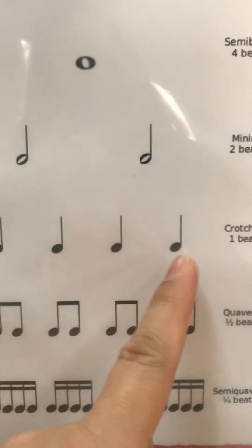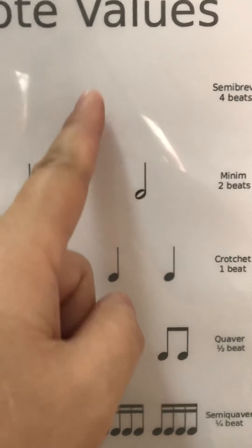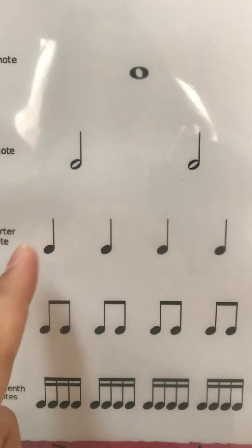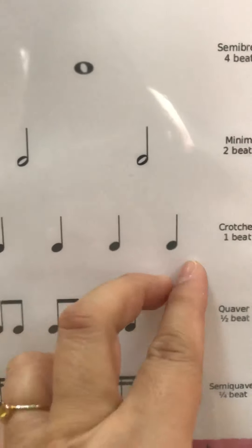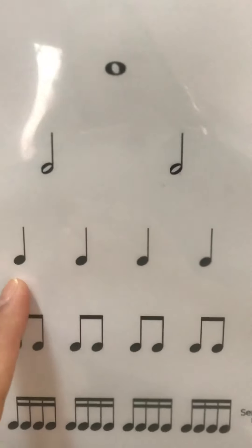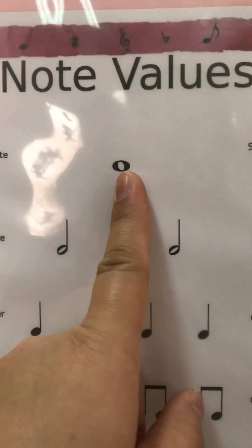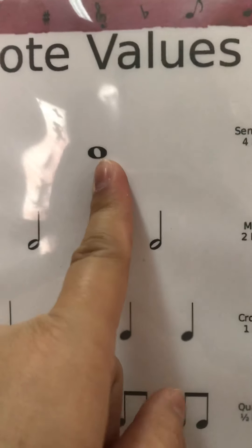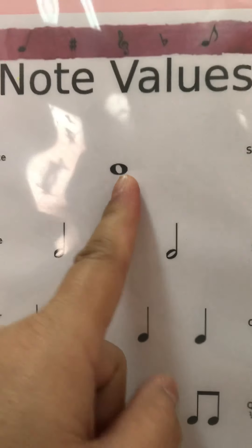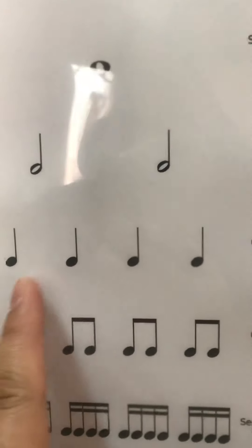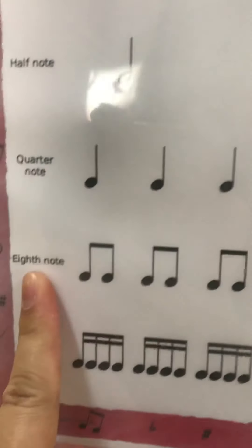The quarter note has one beat. To make four counts we need four crotchets: one, two, three, four. Remember, the whole note or semibreve has four counts, the minim has two counts, and the quarter note or crotchet is one count.